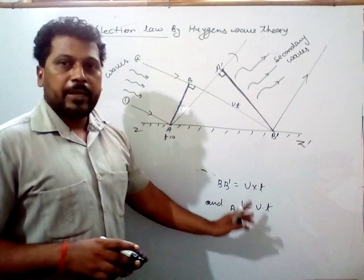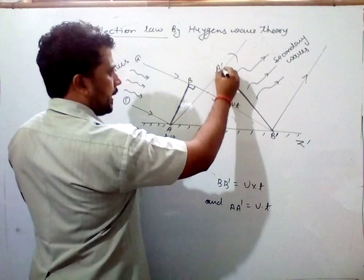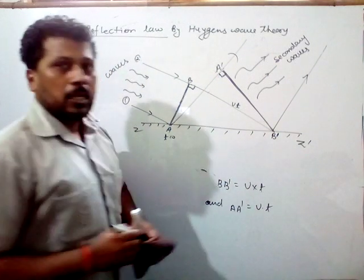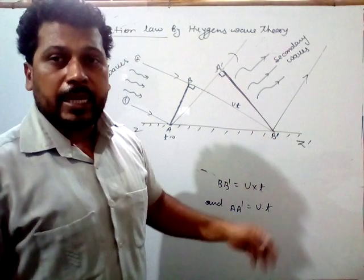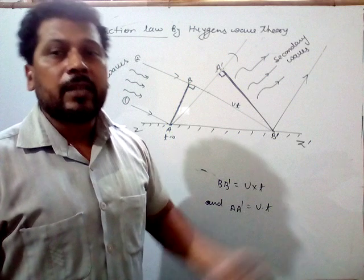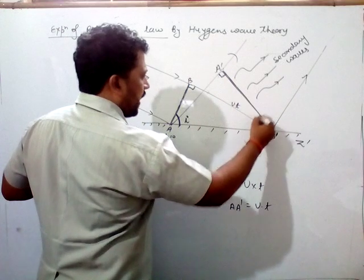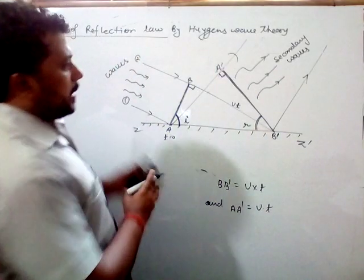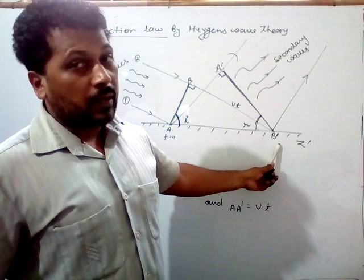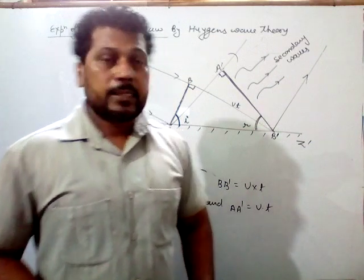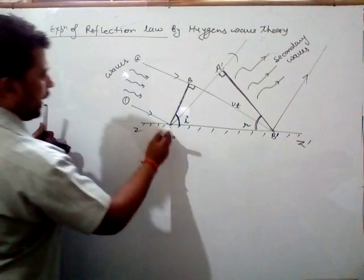So AA' and VB' are both equal. After time T, wave 1 is at A' and wave 2 is at B'. Joining A' and B', this A'B' works as a new wavefront or reflecting wavefront. This is the incident wavefront, so this angle is i, and this is the reflecting wavefront so this angle is r. The waves that emerge from A'B' or the reflecting wavefront are known as secondary waves.